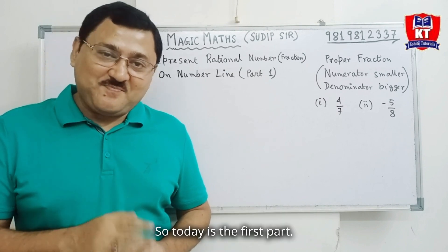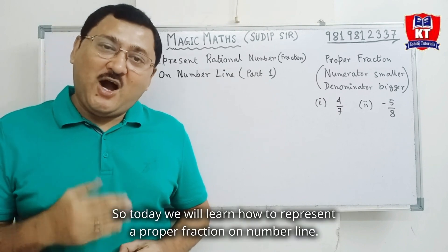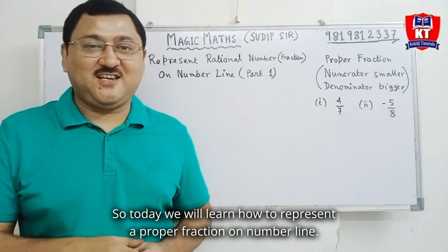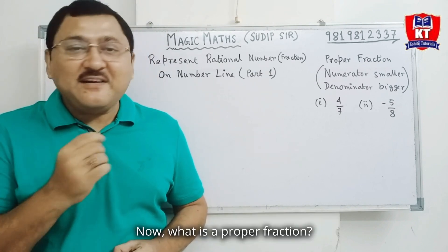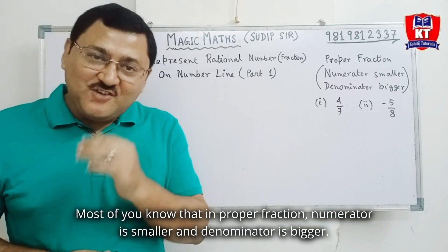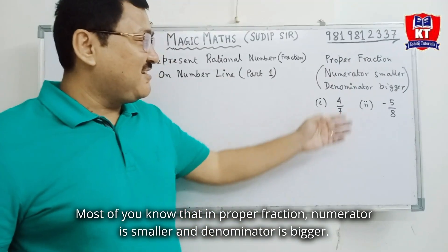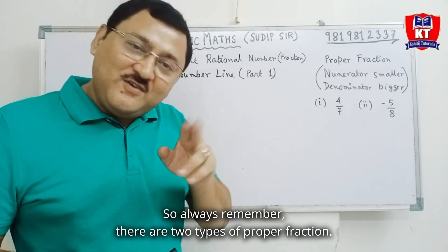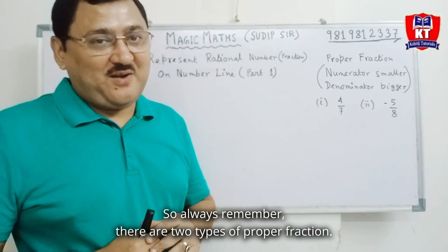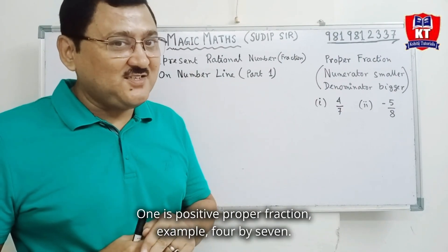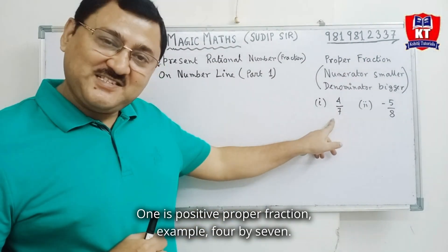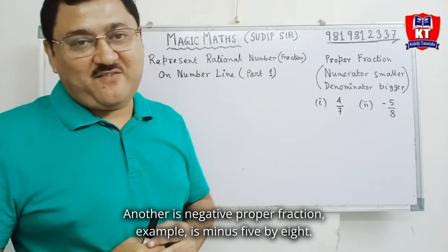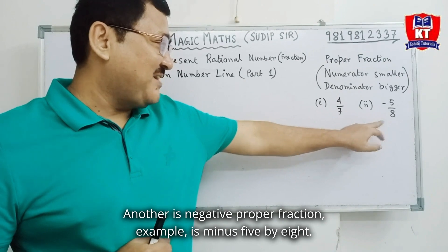Today is the first part. Today we will learn how to represent a proper fraction on number line. What is a proper fraction? Most of you know that in proper fraction, numerator is smaller and denominator is bigger. Always remember that there are two types of proper fractions. One is positive proper fraction, example 4 by 7. Another is negative proper fraction, example is minus 5 by 8.